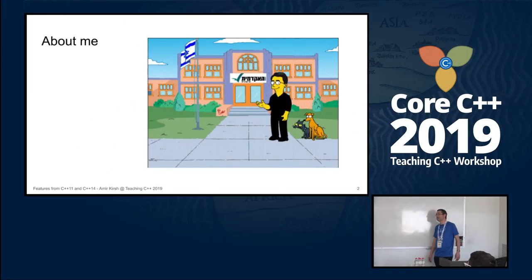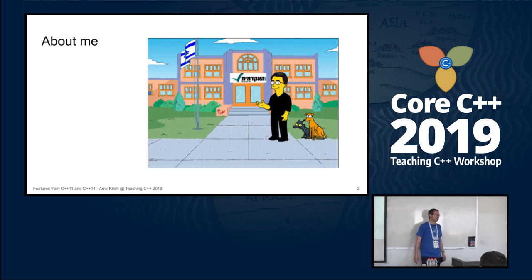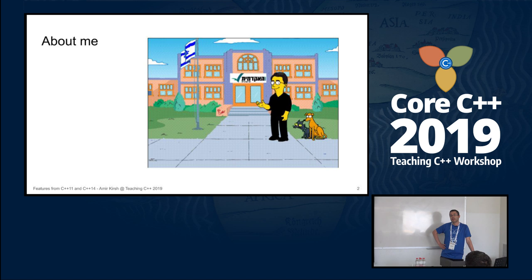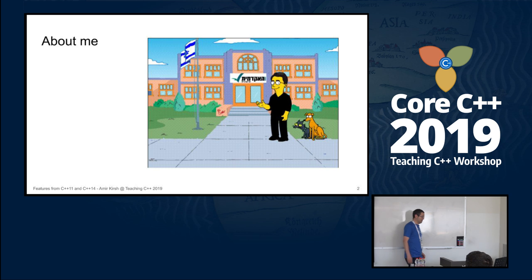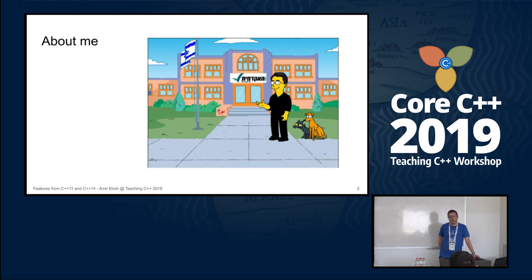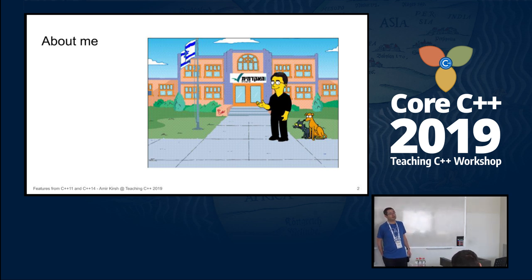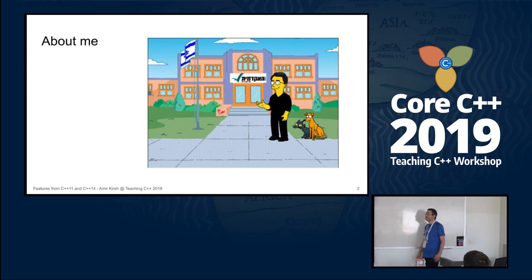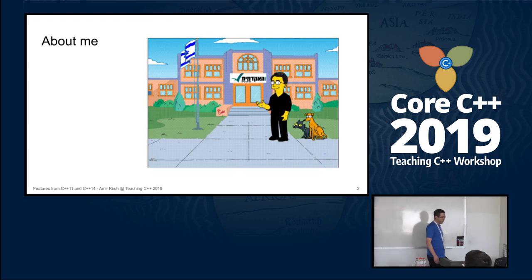A few words about myself. My name is Amir Kirsch. I teach at the Academic College of Tel Aviv-Yafo since 1998, and also at Tel Aviv University — in both institutions I teach C++. I worked in the industry for a few years as chief programmer at Converse, doing a lot of C++. I come with industry background that helps me understand what the industry seeks when employing juniors, and I try to bring that to class.